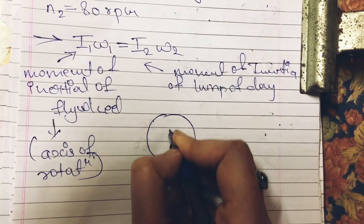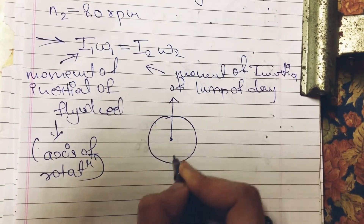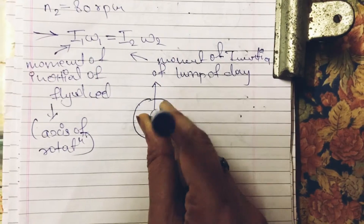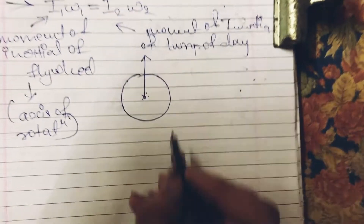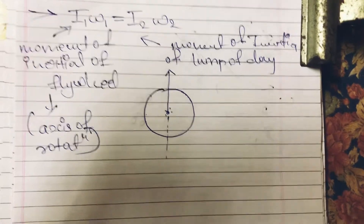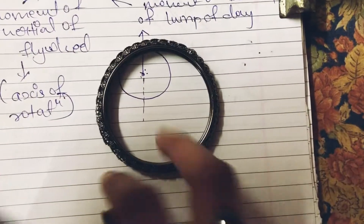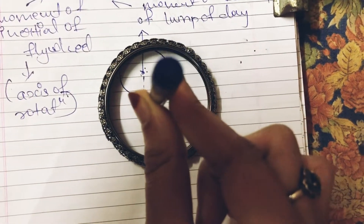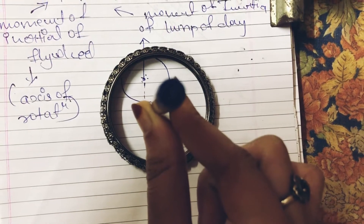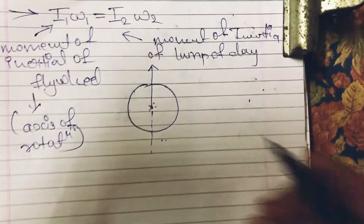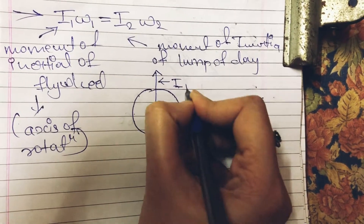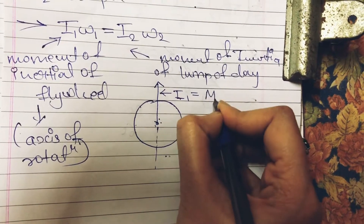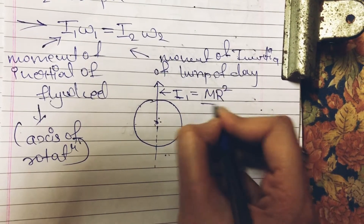And I₂ is the moment of inertia of the flywheel together with the lump of clay, considering the axis of rotation. Let's see where I₁ is. This is your flywheel and this is that central axis of rotation. The axis passes through the center. So here I₁ for a uniform disc is MR² upon 2, where M is the mass and R is the radius of the disc.